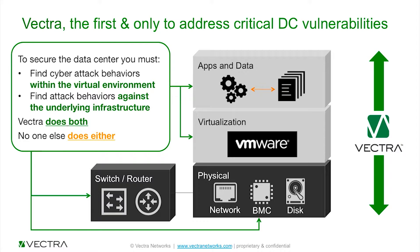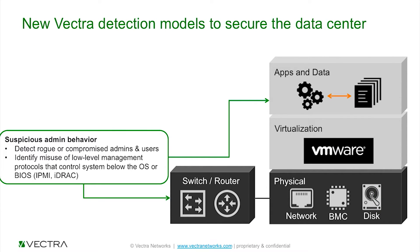But that's just the first part. We're also looking down at the underlying infrastructure, where we have new detection models able to expose some of the most advanced attacks in the world by understanding whether these devices have been compromised, whether they have rootkits below the operating system level, or whether they've been subverted at a really fundamental level. We start by looking for things that don't make sense around administrator behavior — signs of a rogue or compromised administrator. Maybe he typically supports certain applications, but now is touching lots of different applications and data sources within the data center that are out of his purview or role of responsibility. We can identify that behavior.